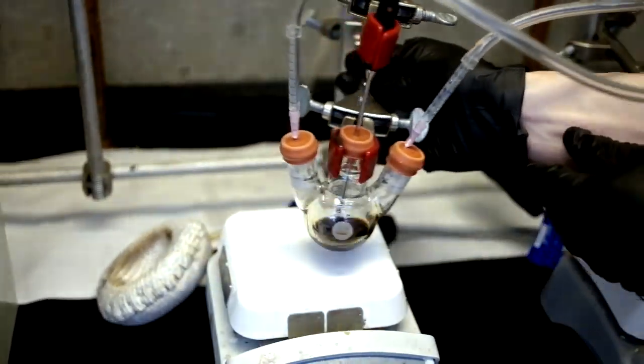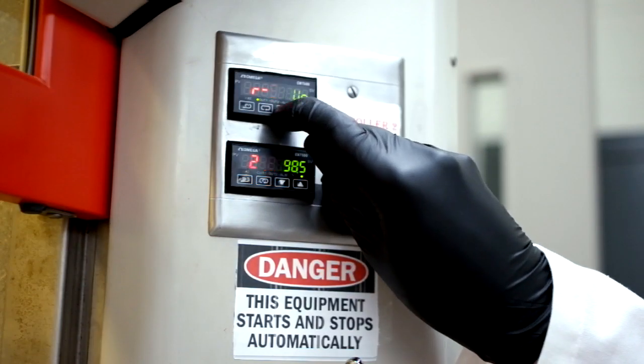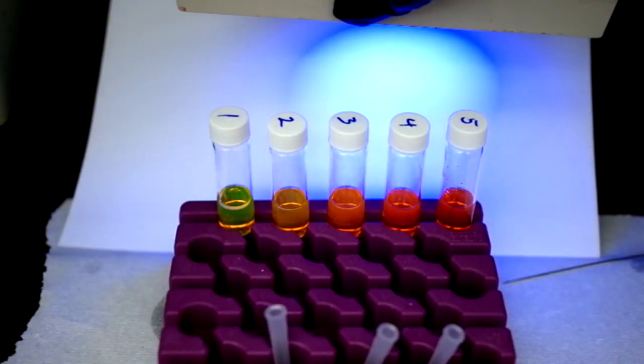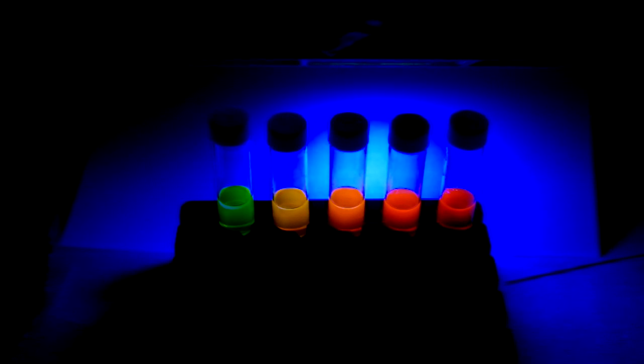After 5 minutes, remove the flask from the heat mantle and shut off the heat. You will notice that the fluorescence of the samples change from green to red.